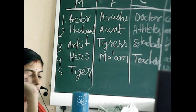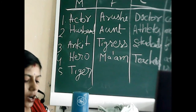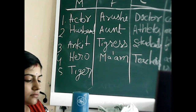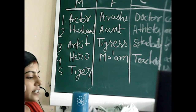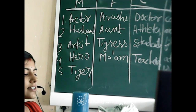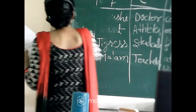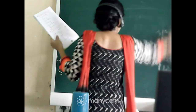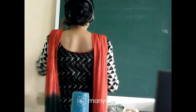Come to page number 31, exercise F. Rewrite the following sentences changing the nouns in bold from masculine to feminine gender, making other necessary changes. You have to convert the masculine to feminine gender.